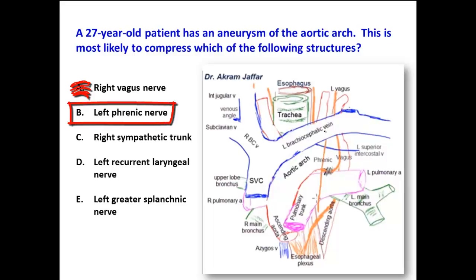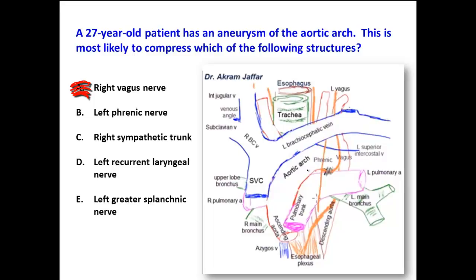The left phrenic nerve crosses the arch of the aorta, but in cases of aneurysm of the aortic arch, it is less likely to be compressed. It might be pushed but not compressed because it is related to the anterior or left surface of the arch of the aorta.